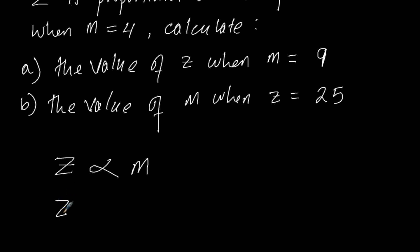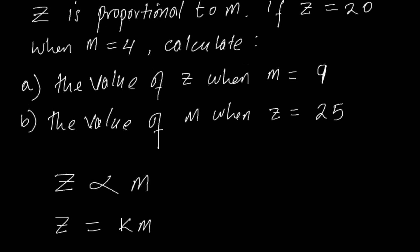So Z equals KM, just to form an equation. We shall have to first find the value of this constant of proportionality, and we find the value of the constant of proportionality using this information: that Z equals 20 when M is 4.